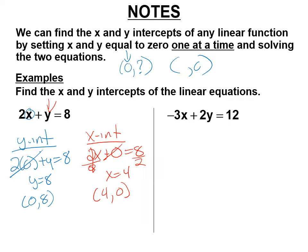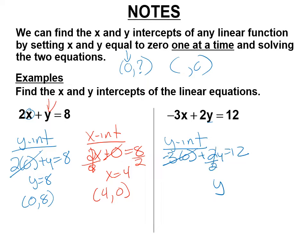Let's do this again. Let's find the y-intercept first. The y-intercept occurs where the x-coordinate is 0. So we get negative 3 times 0 plus 2y equals 12. What's negative 3 times 0? 0 — it crosses out. I have 2y equals 12. How can I get y by itself? Divide both sides by 2. So y equals 6. The y-intercept is 0, 6.